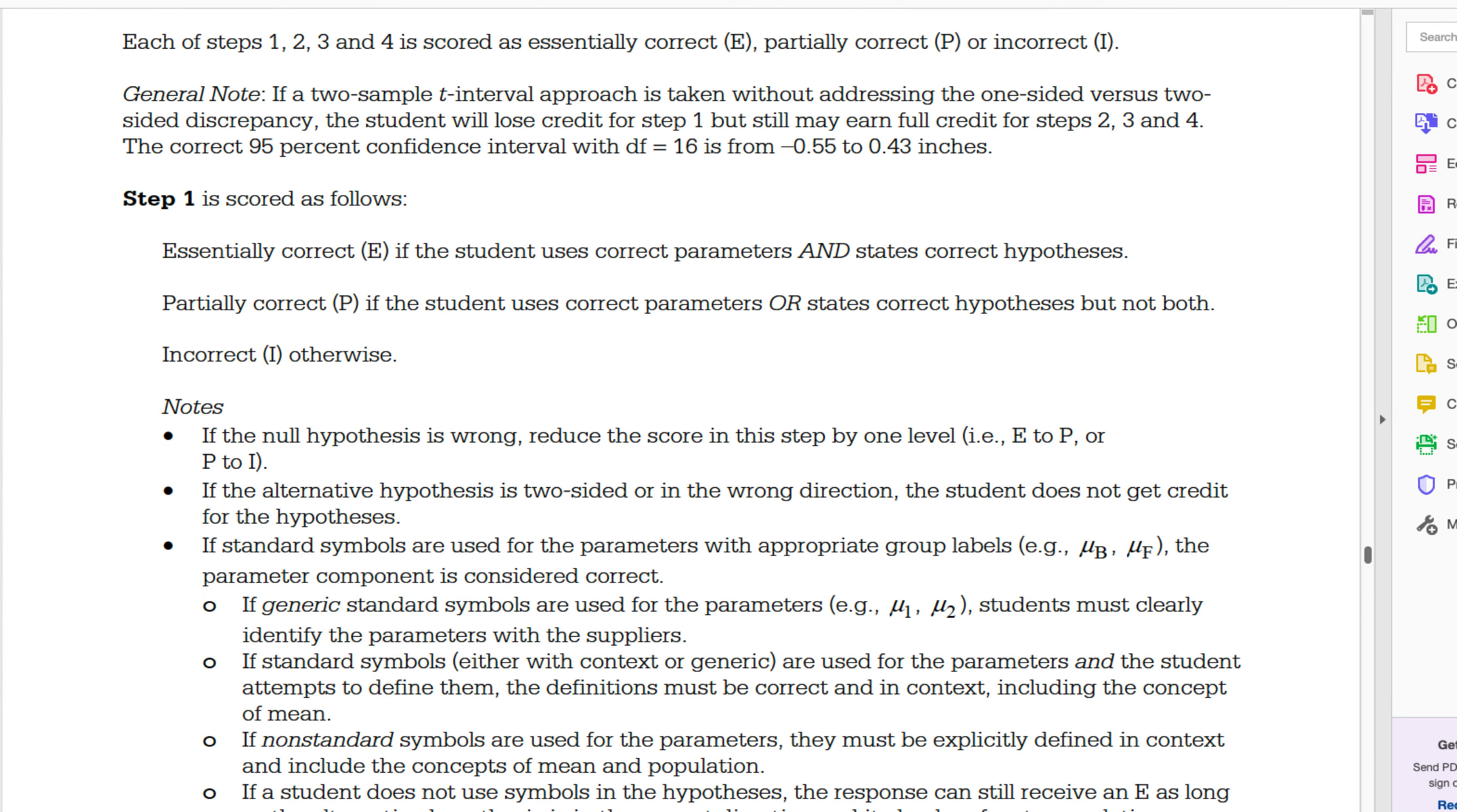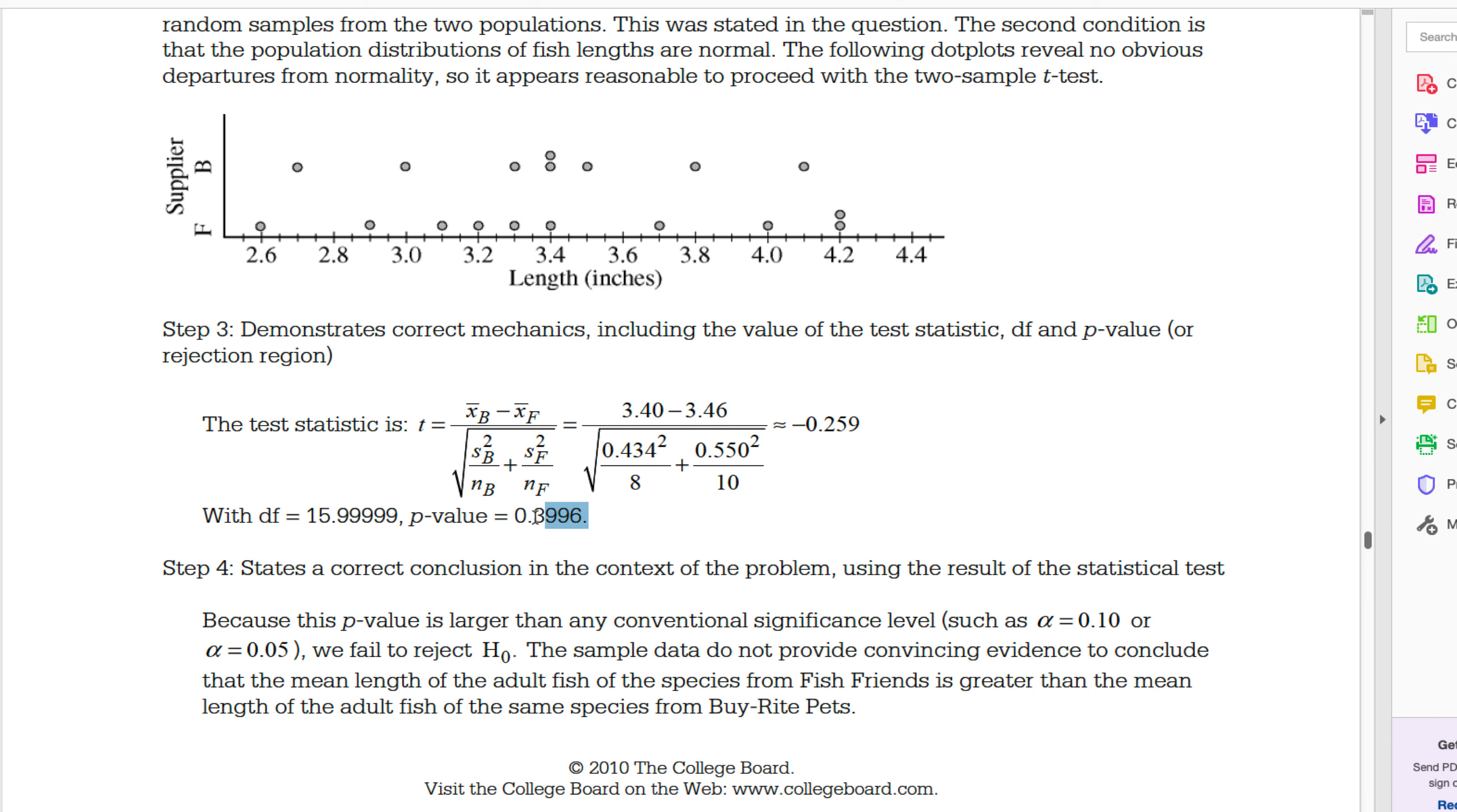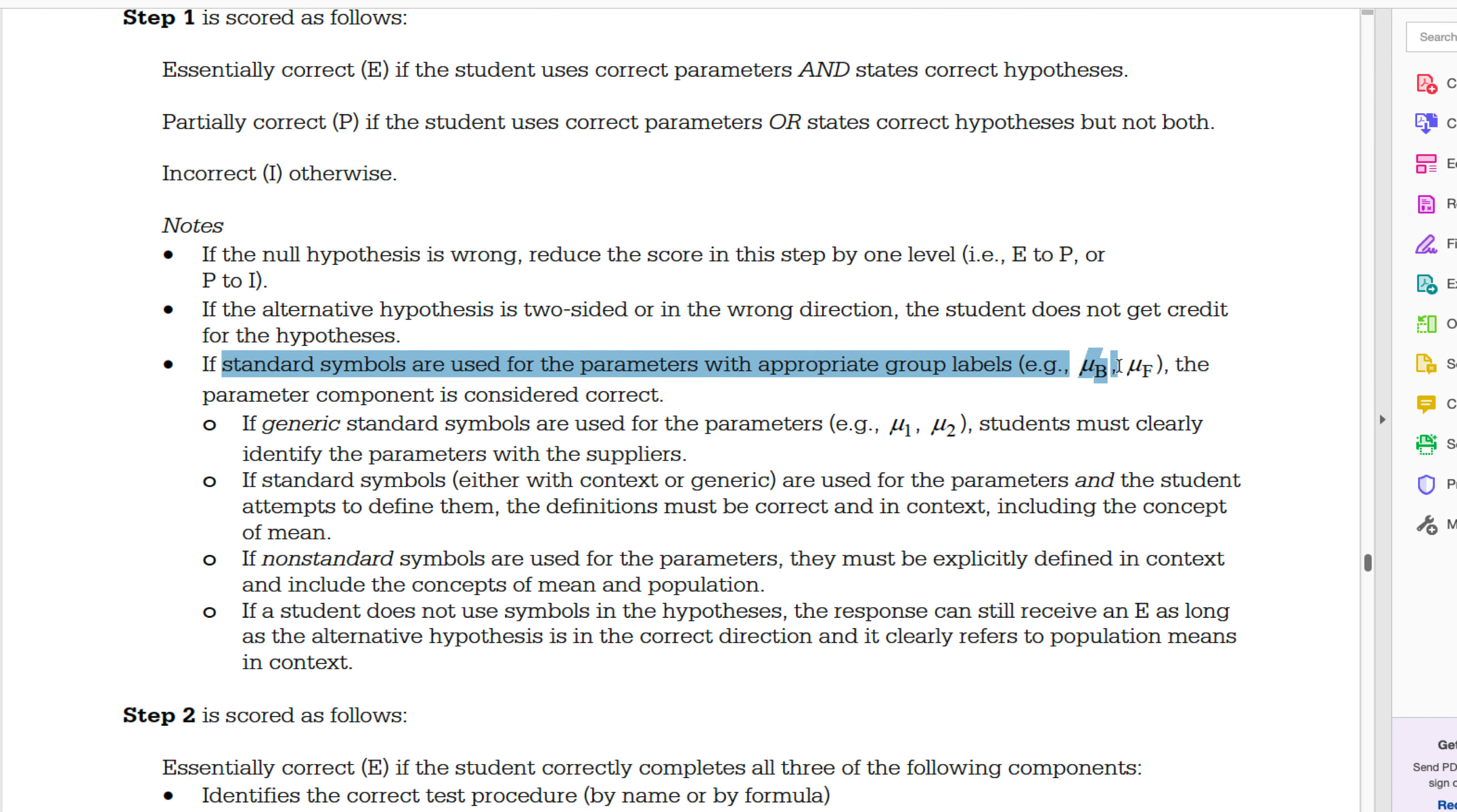Let's go over here to the solution guide and see how it is scored. The correct answer, and then we got test statistic. They actually show the formula here. Again, you can Google this solution guide if you ever want to. The p-value is larger. We got the right p-value, correct conclusion in context using the result of the test statistic. Let's go to the next page here to see some of these little tiny points. You may get full credit if you do an interval, although it is possible to do that.